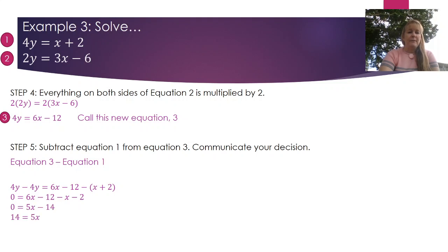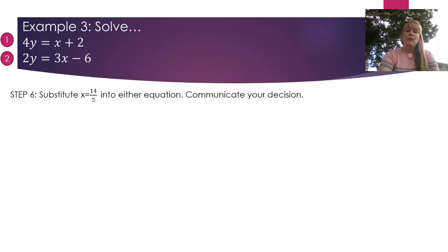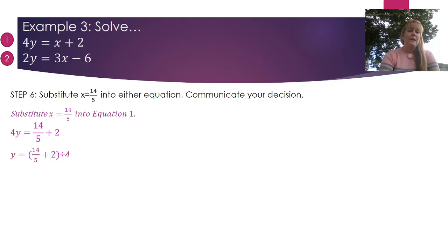Expanding that out, I find x = 14/5. A lot of people are tempted to convert that to a decimal — don't do that, leave it as a fraction. Now substitute x = 14/5 into one of the original equations. Both are fairly complex, so it doesn't matter much which you choose, but communicate your decision. I chose equation 1 because I wouldn't have to multiply x by anything. Expanding gives 4y = 14/5 + 2.